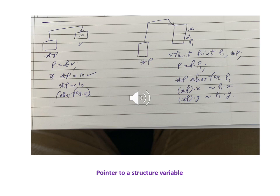When accessing p1's member variables, writing just p1 is not enough — we must use the dot operator. So p1.x gets the x coordinate and p1.y gets the y coordinate. To access those members using the pointer, we write (*p).x and (*p).y, since *p is an alias for p1. Note that we need to put brackets around *p, and the reason for this has to do with operator precedence, which we will look at in the next slide.